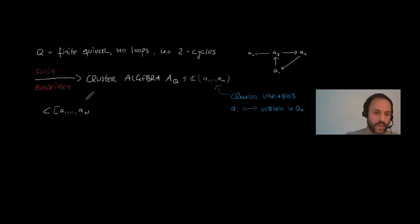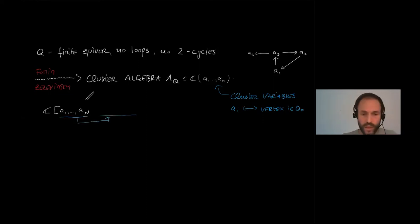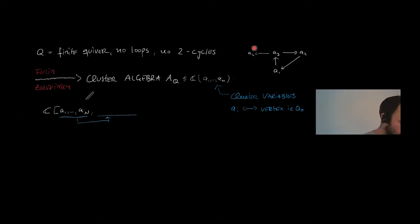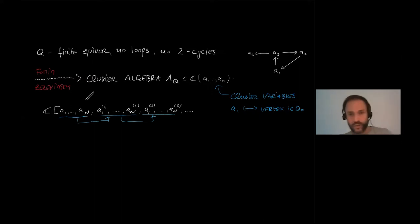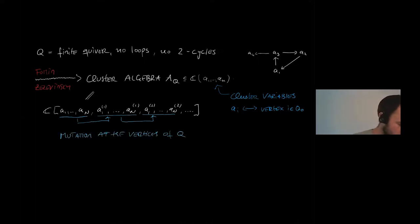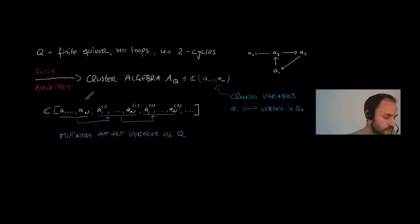We start with the polynomial ring of these variables and then there is an inductive procedure which takes as input this quiver and our initial set of cluster variables, and produces a new set of cluster variables and a new quiver. This procedure goes on and on, and whatever we obtain after doing this infinitely many times is our cluster algebra. This procedure is called mutation at the vertices of Q — for each vertex we can do a mutation and obtain a new set of cluster variables.